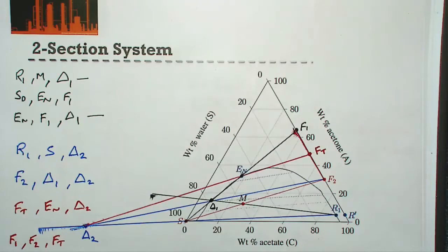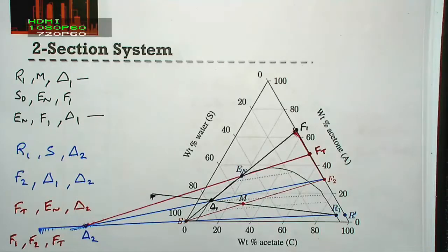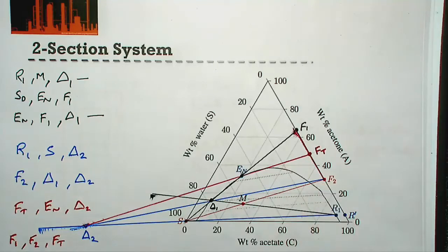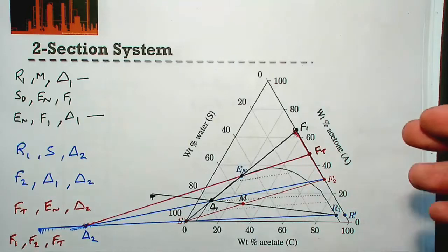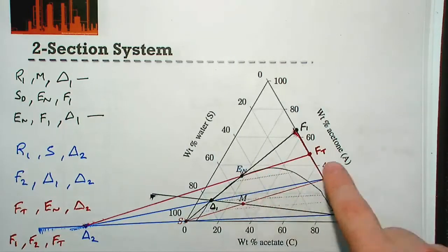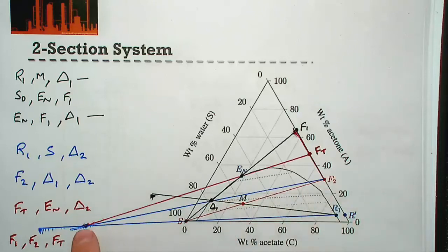To find the number of stages, we use exactly the same method as for the single-section Hunter-Nash. We start from our feed and step using the equilibrium lines and operating points. When we pass our F2 feed point, we move on to our other operating point. We start drawing stages using δ1 between E_N, and as we get to F2 we switch to using the δ2 operating point until we reach our desired raffinate composition.